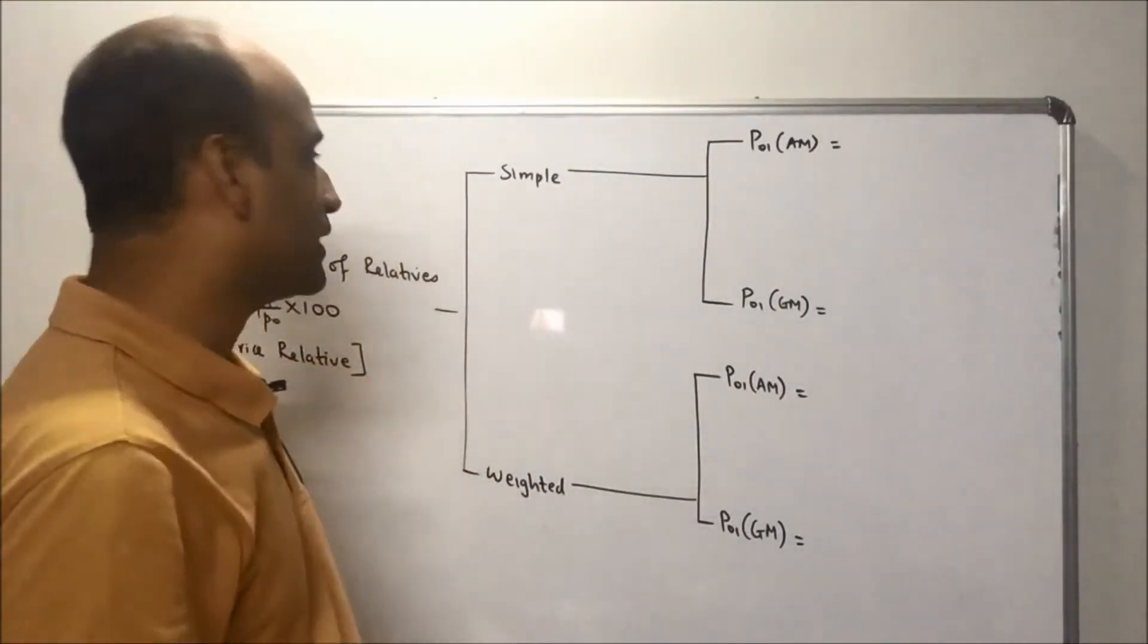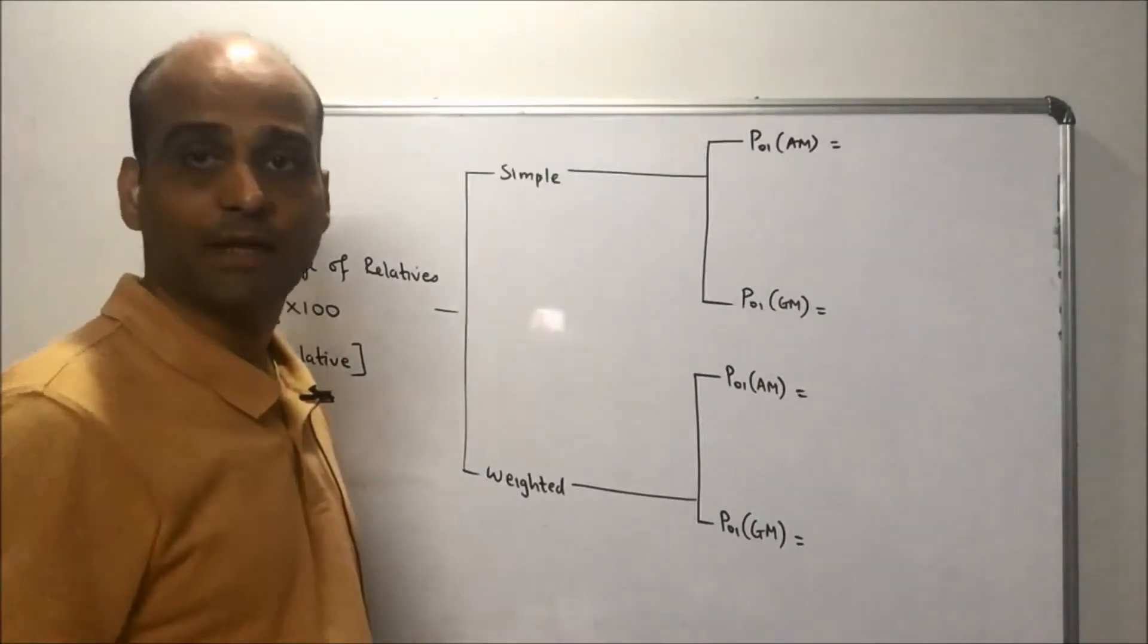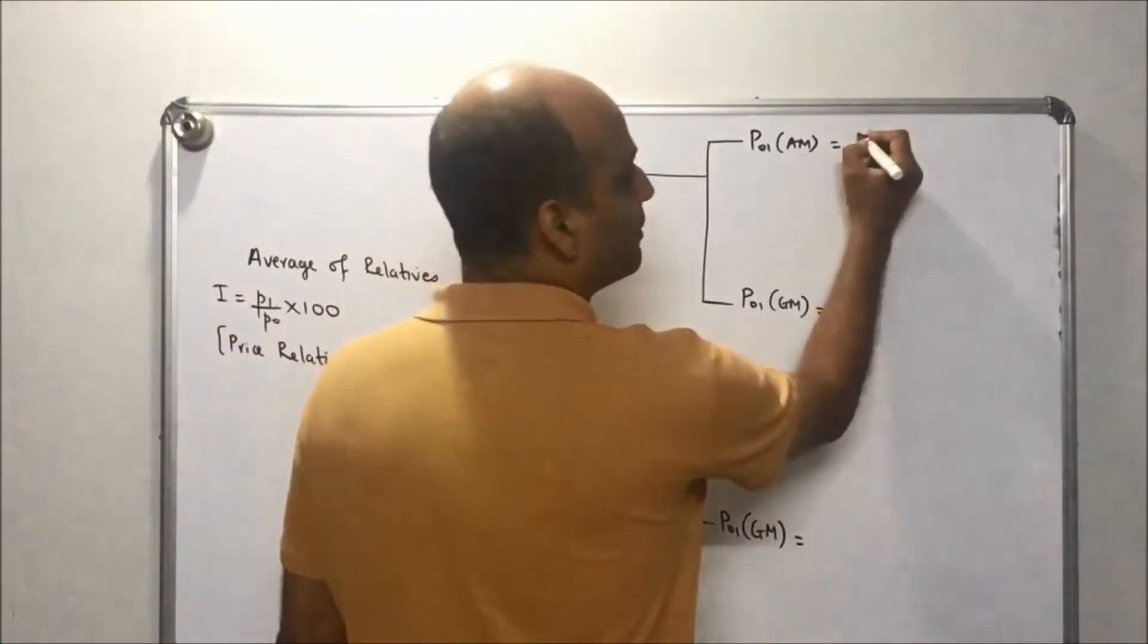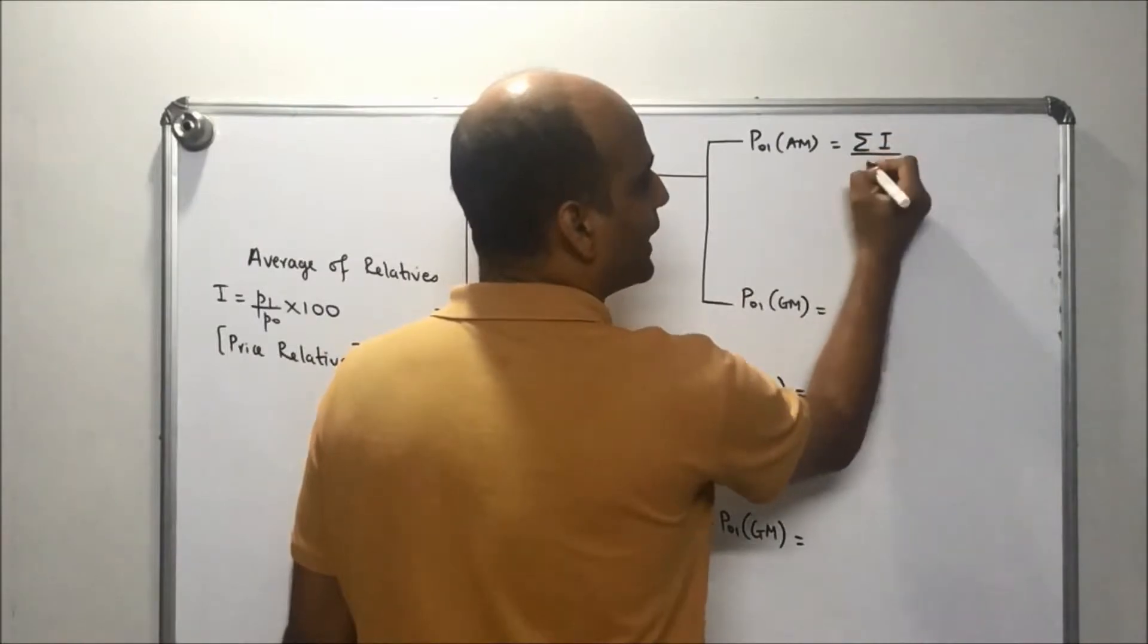In arithmetic mean, the simple one, you just have to take the arithmetic mean of the price relatives. So the formula would be summation of I divided by n.